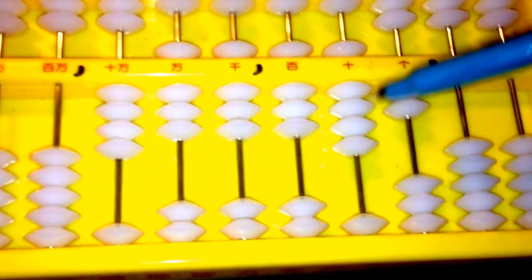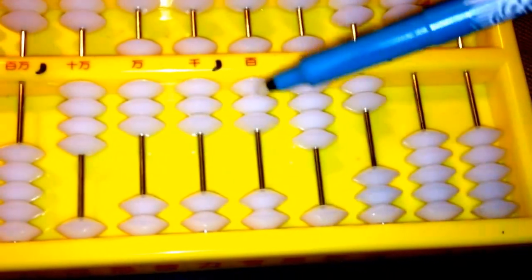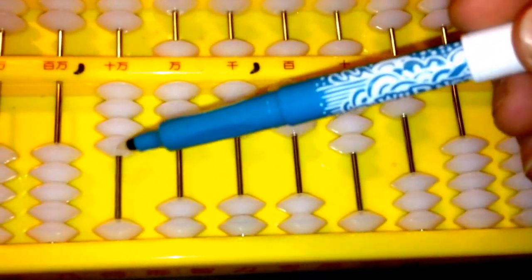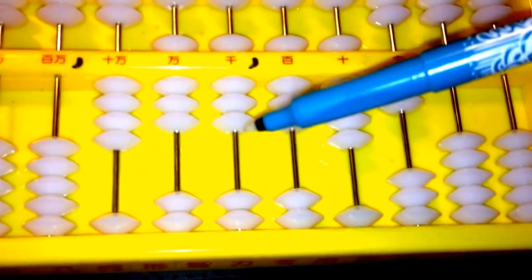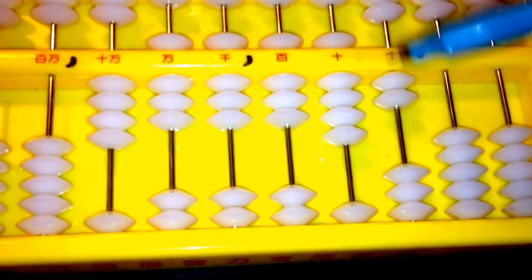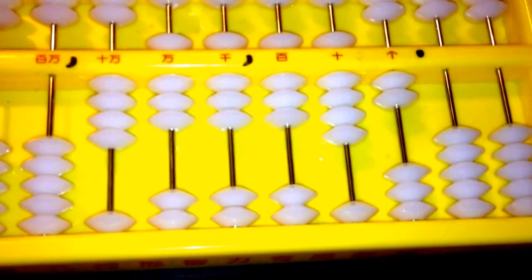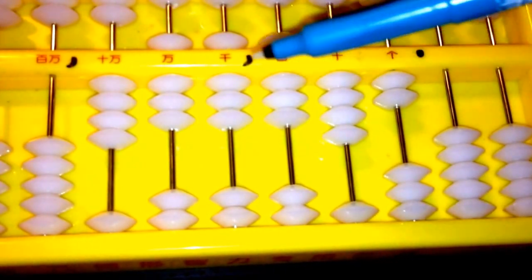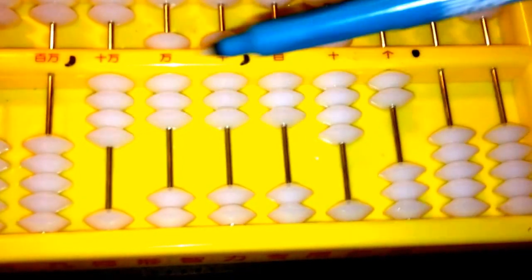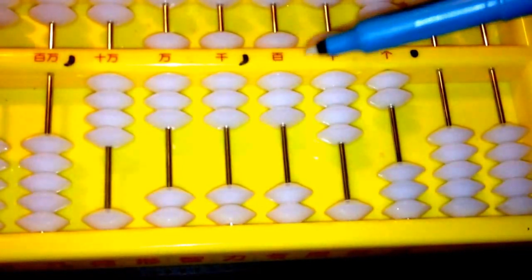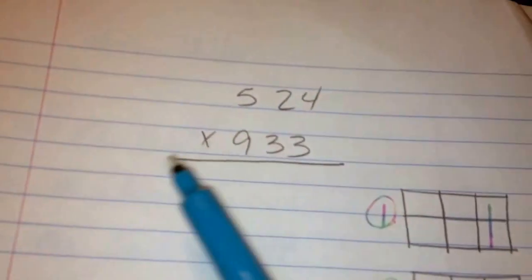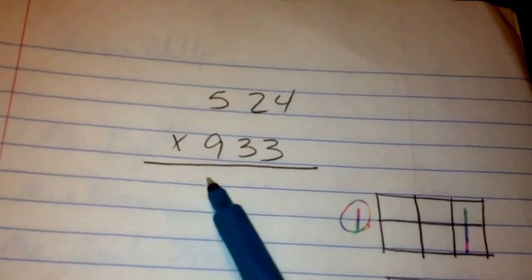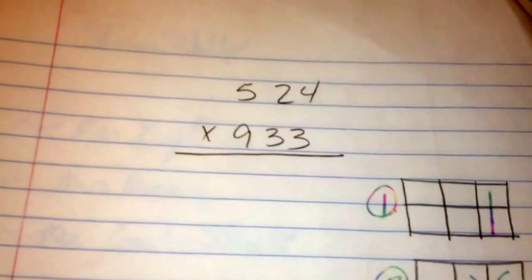So make sure that we don't need to move and carry anything over. We're good. So our final answer is 4, 8, 8, 8, 9, 2. So here's our comma, so 488,892 is the answer to 524 times 933. Thank you for your time.